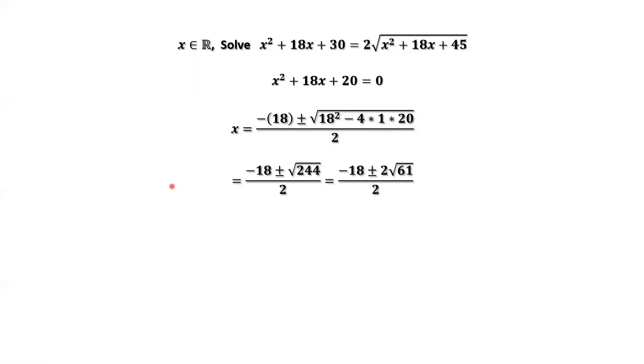Continue to simplify. We have two answers for x: x equals negative 9 plus minus square root of 61.